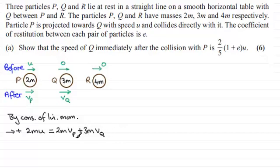Okay. So what I could do now is we could divide through by m anyway because it's in every term. And I'm going to just clean this up now. It's just going to be 2U then equals 2VP plus 3 times VQ. This is going to be one equation. We need another one.